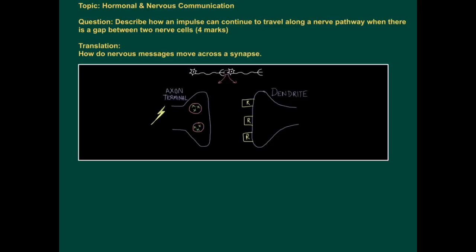This exam application tutorial is on the topic of hormonal and nervous communication. The question for four marks describes how an impulse can continue to travel along a nerve pathway when there is a gap between two nerve cells.